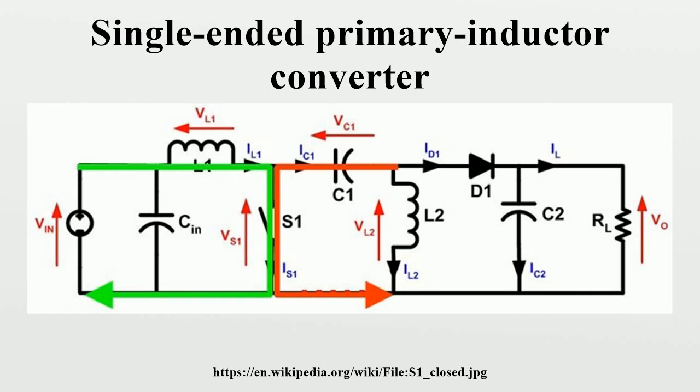Capacitors with low equivalent series resistance should also be used for C1 and C2 to minimize ripple and prevent heat buildup, especially in C1 where the current is changing direction frequently.